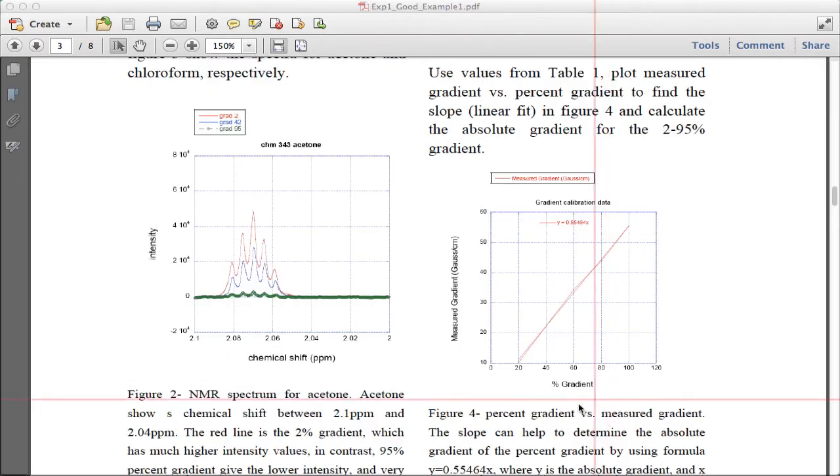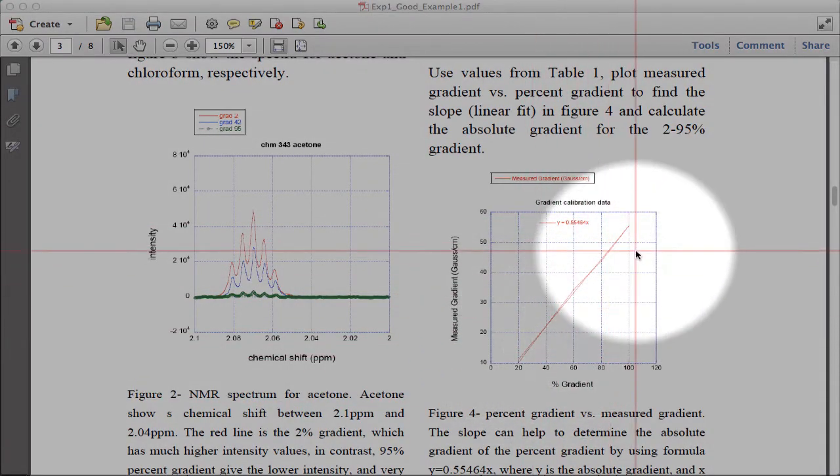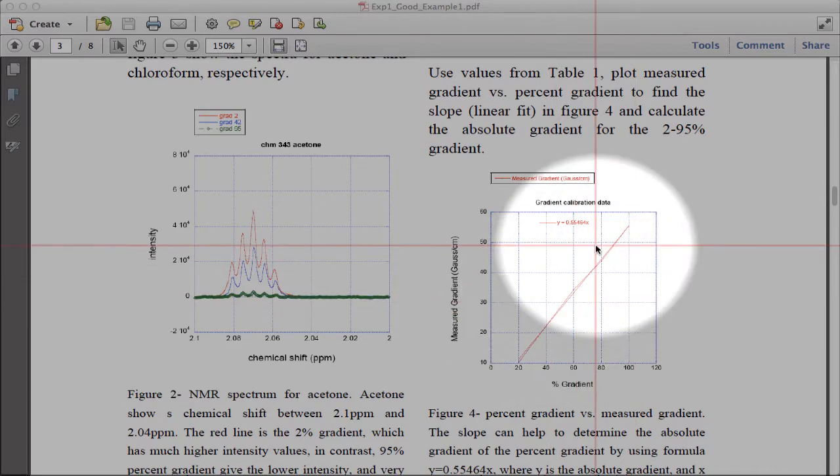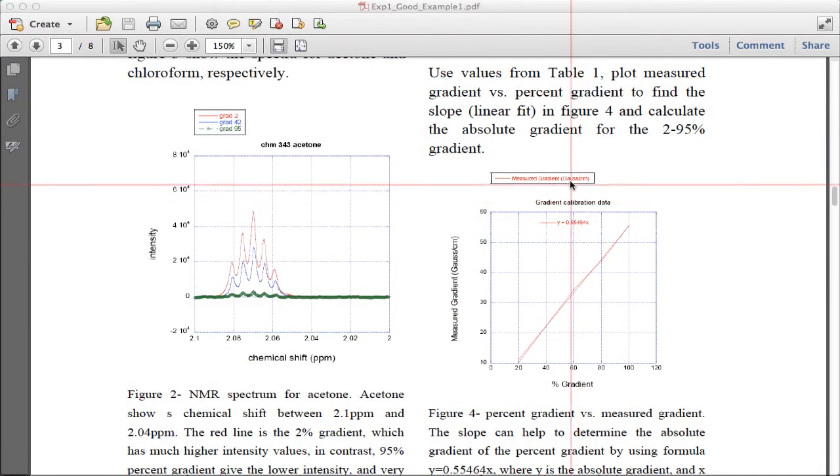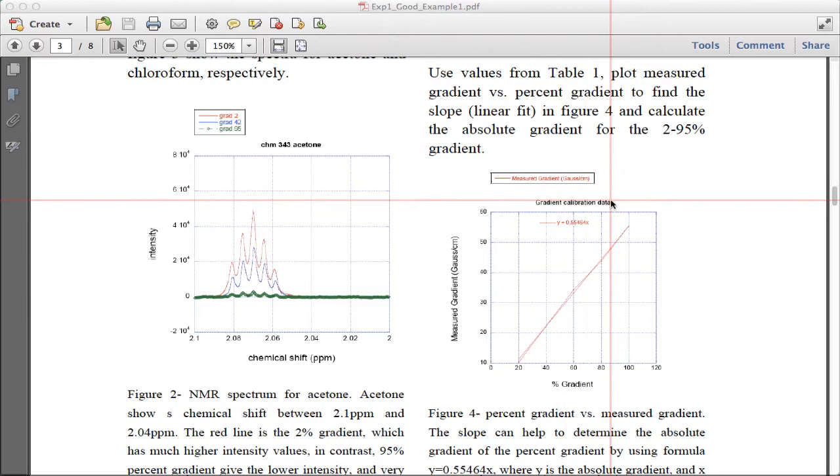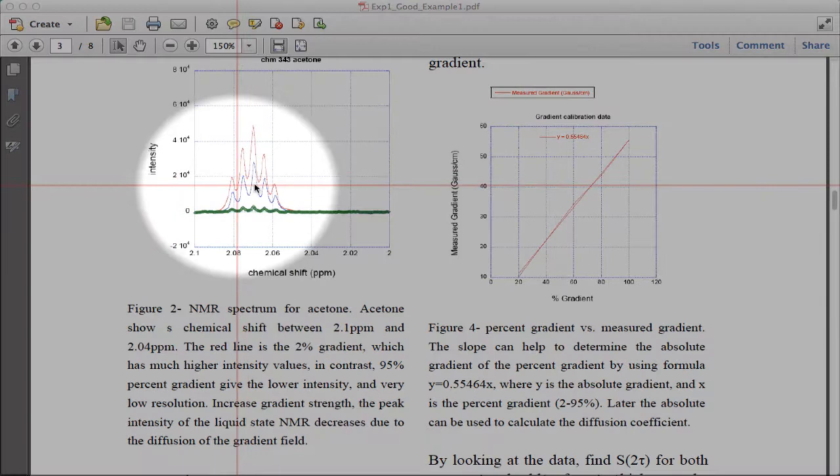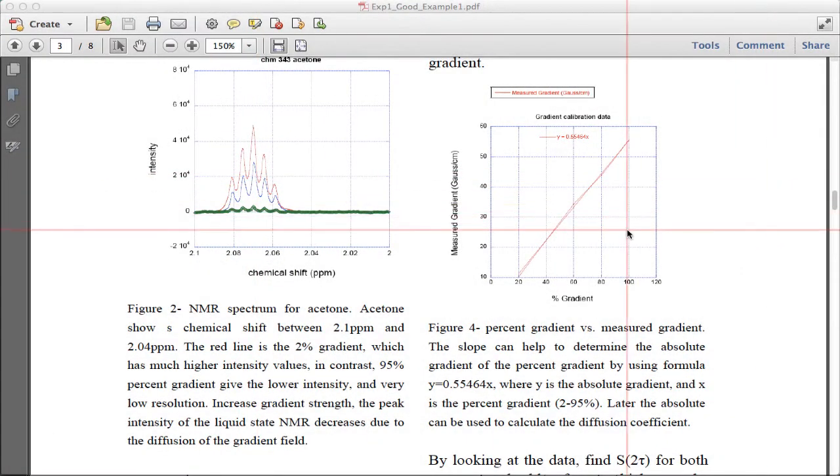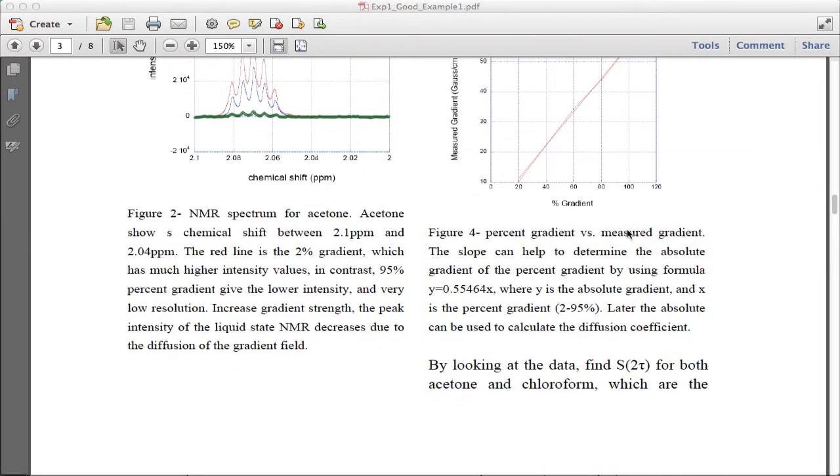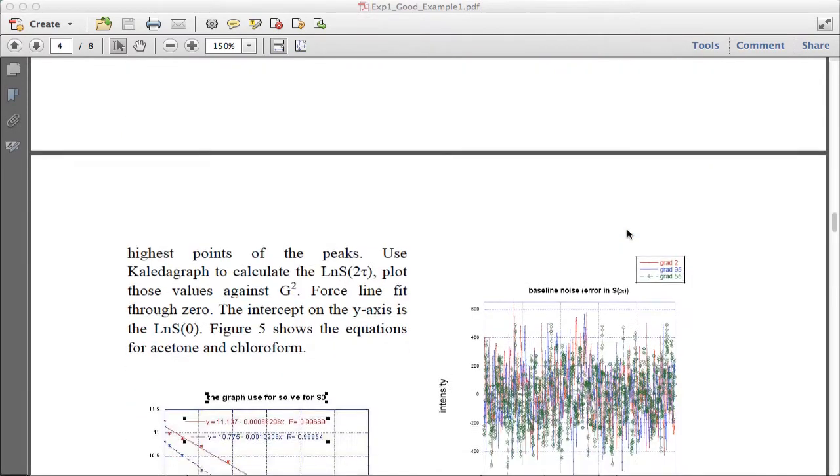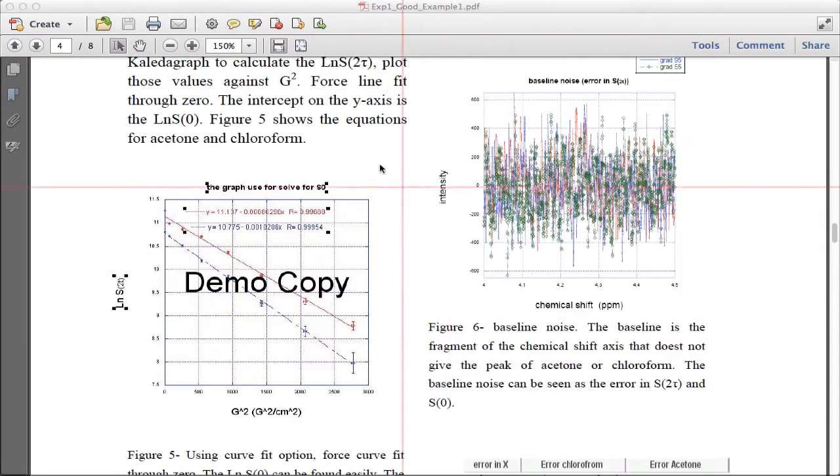When they calibrated their gradient, it's hard to tell where the data points are on this plot and what the fit to the data points are, and that's a big problem. Again, they have the legend outside and a title, which they don't need. Your actual data typically is given as data points, and then the linear fit is given as a line.